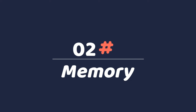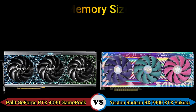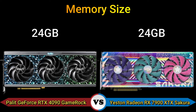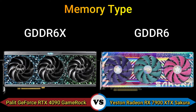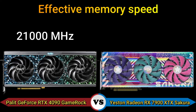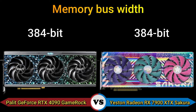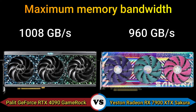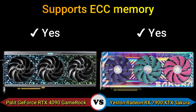Part 2 — Memory. Memory size: 24 GB. Memory type: GDDR6X and GDDR6. Effective memory speed: 21000 MHz and 20000 MHz. Memory bus width: 384-bit. Maximum memory bandwidth: 1008 GB/s and 916 GB/s. Supports ECC memory. Multi-display technology: yes.